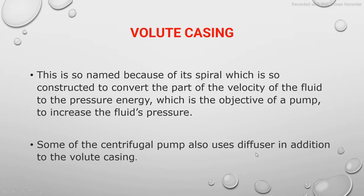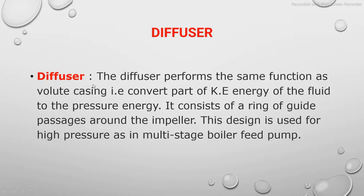Some centrifugal pumps also use a diffuser in addition to the volute casing in order to achieve much higher pressure. The diffuser performs the same function as the volute casing — converting the kinetic energy of the fluid to pressure energy. Construction-wise, it consists of a ring of guide vanes that reduce the velocity of the fluid, causing an increase in pressure energy.